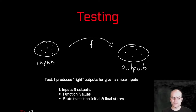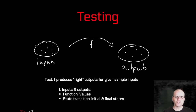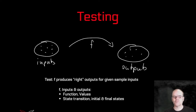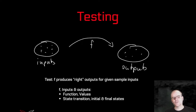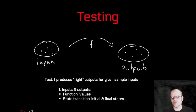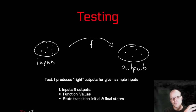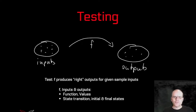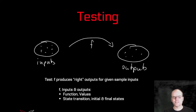When I say inputs and outputs, I mean this in a very general sense. This could either be just ordinary values where your program is a function that produces some output values, or it could mean some initial state and then your program transforms that state to some final state. Testing in both of these cases means that you take some known input or initial state, you let your program run, and then you check whether the output or final state is as expected.